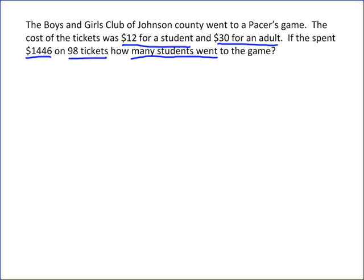Let's go ahead and let x be our variable — x is going to be the number of students. We also need a variable for the number of adults. If the number of students is x, then subtracting that from 98 gives us the number of adults, so 98 minus x equals the number of adults.